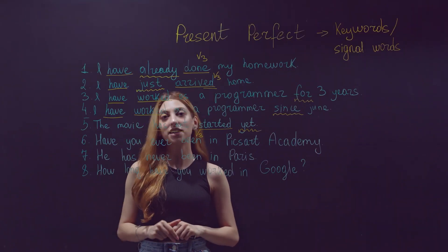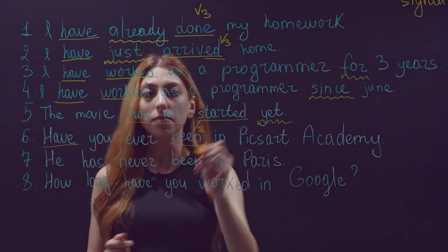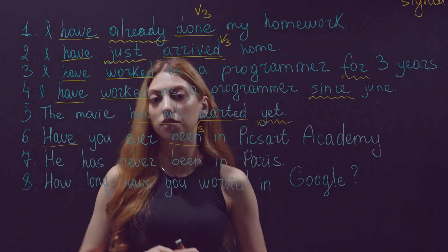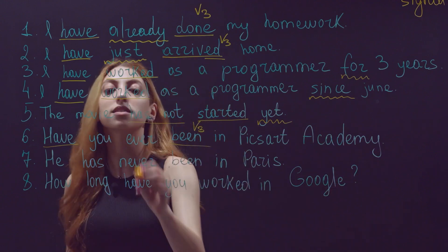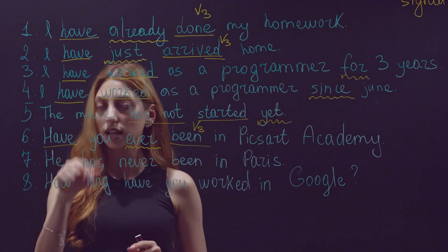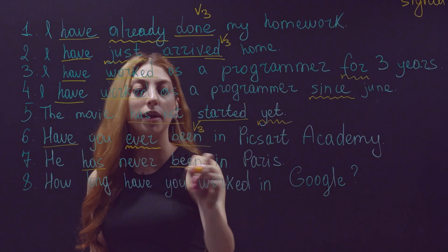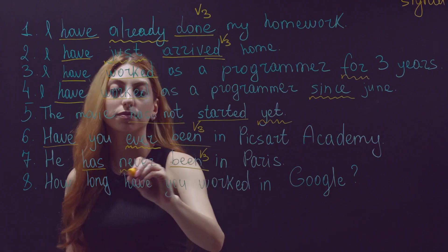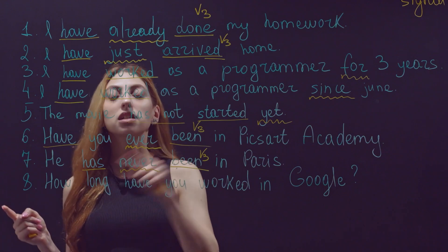Sixth: 'Have you ever been to Pixart Academy?' Structure: 'have + been' — been is the third form of 'be': was/were, been. The keyword is 'ever'. Seventh: 'He has never been in Paris.' Structure: 'has + been'. The keyword is 'never'. With 'ever' and 'never', I want to talk about my whole past life up to now.